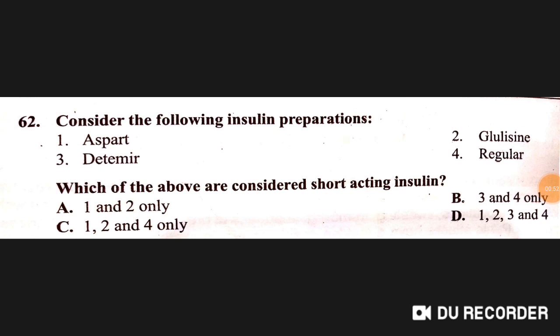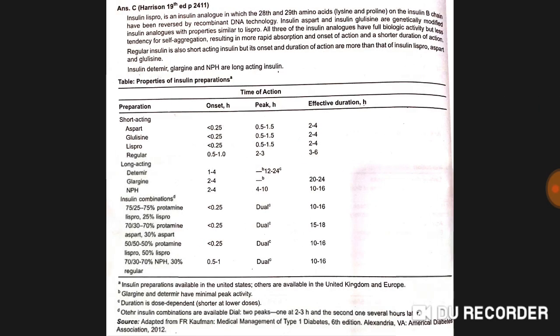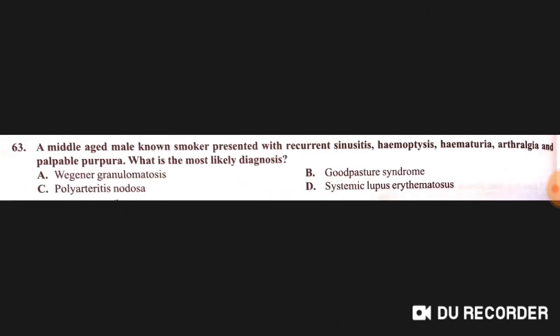Consider the following insulin preparations — which of the following is short-acting insulin? Aspart, glulisine, and regular insulin are short-acting; detemir is a long-acting insulin. The answer is C: options 1, 2, and 4.